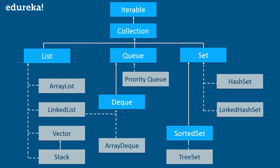In this figure, blue boxes refer to the different interfaces and gray color rectangles define classes. Here, List is an interface and ArrayList, LinkedList, and Vector — all these classes implement the List interface. Similarly, Deque is also an interface, and it extends and inherits the Queue interface.